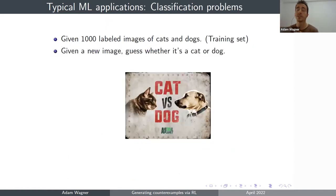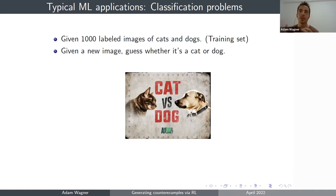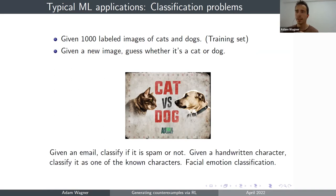Another very common application is classification. Instead of a house database, you could start with a thousand pictures of cats and a thousand pictures of dogs, train an algorithm on this training set, and afterwards use it to classify any future pictures as cats or dogs. There are many similar problems in this category, such as deciding whether an email is spam, recognizing handwritten characters, and so on.